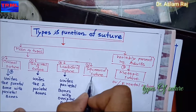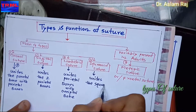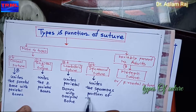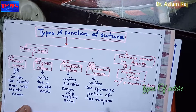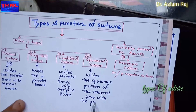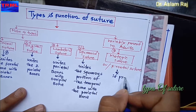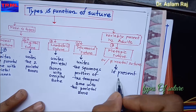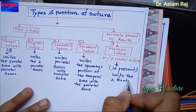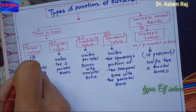The fourth one, the squamosal suture, unites the squamous portion of the temporal bone with the parietal bone. The last one, the metopic or frontal suture, if present, unites the two frontal bones.